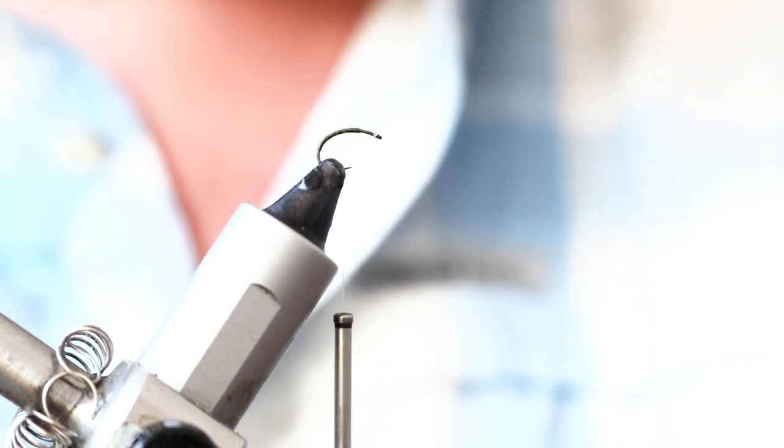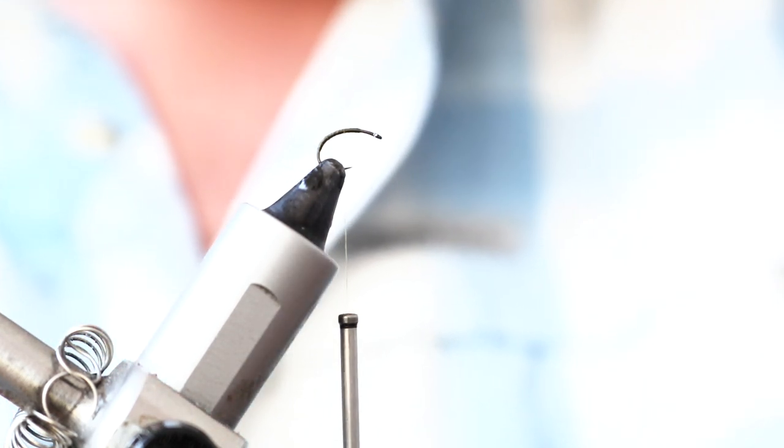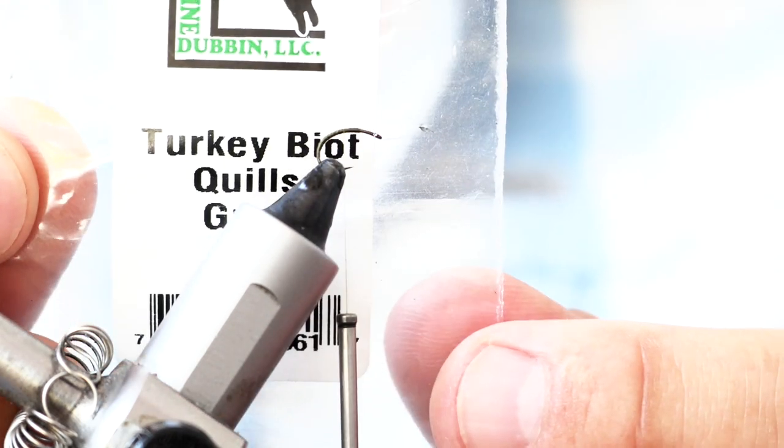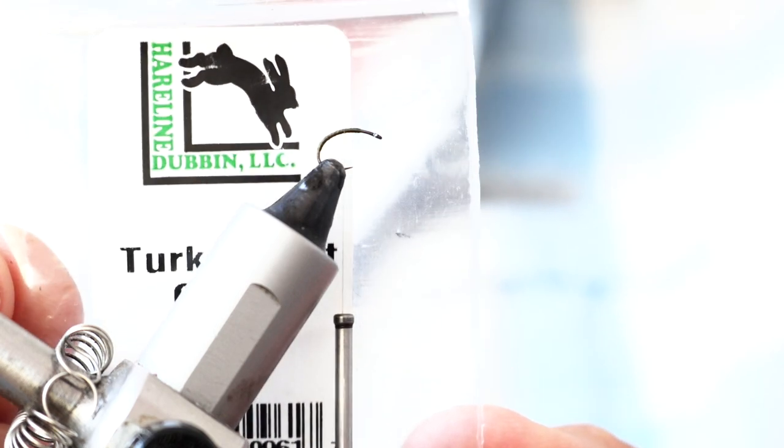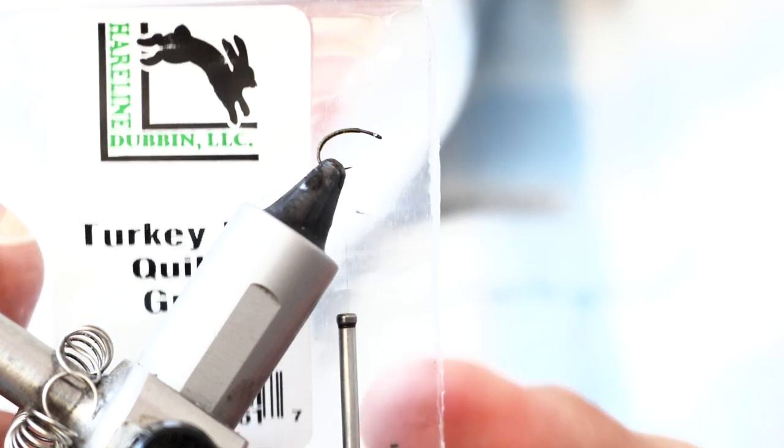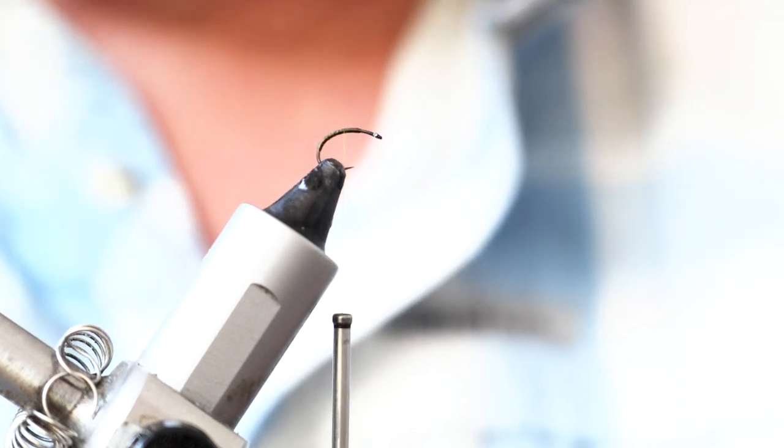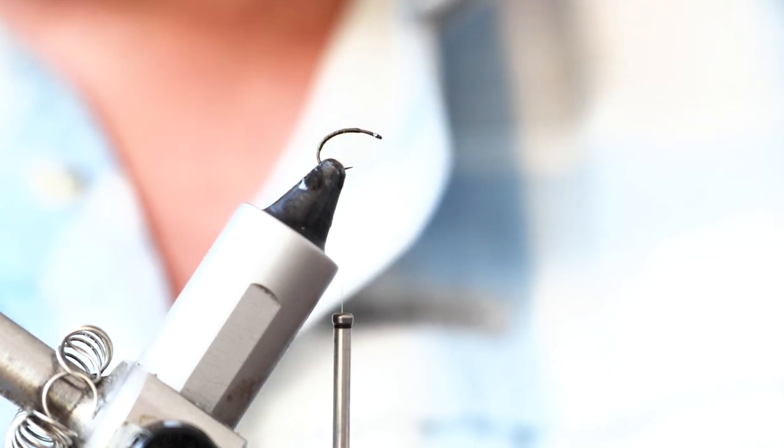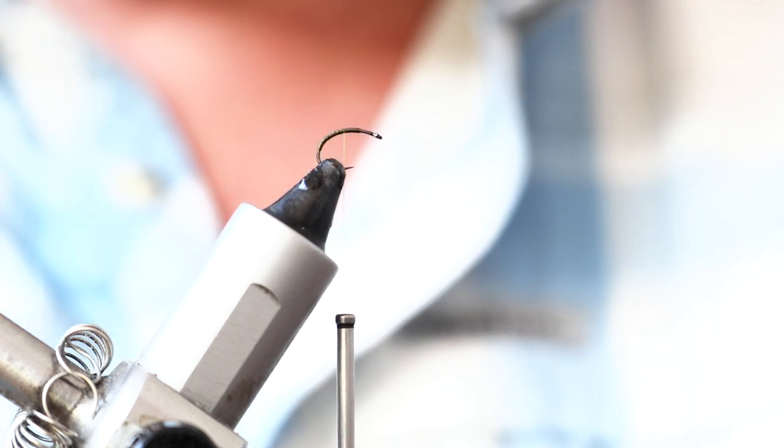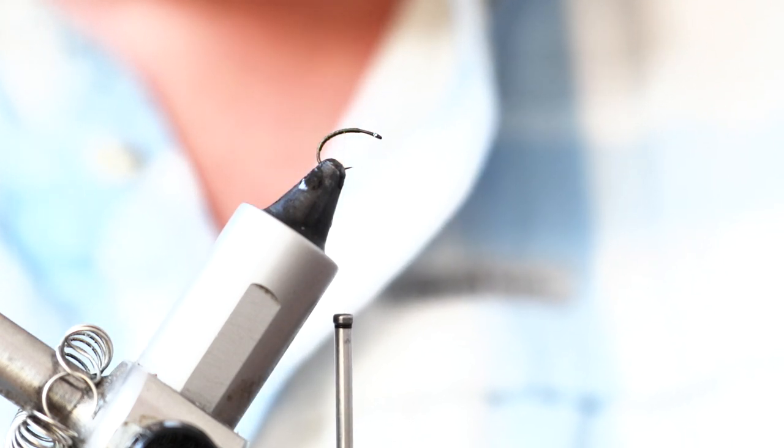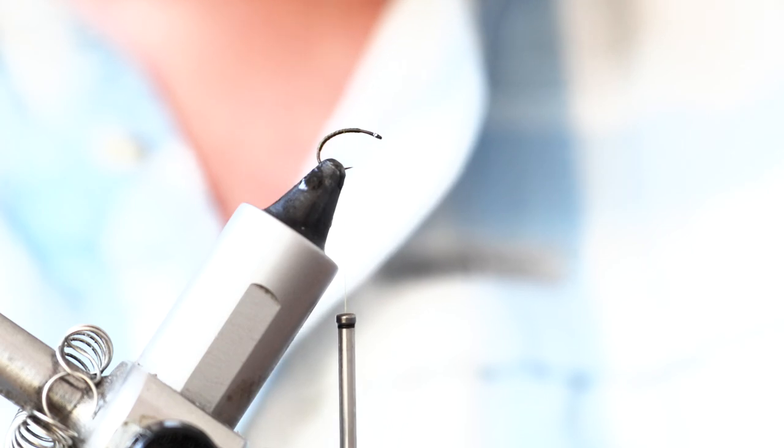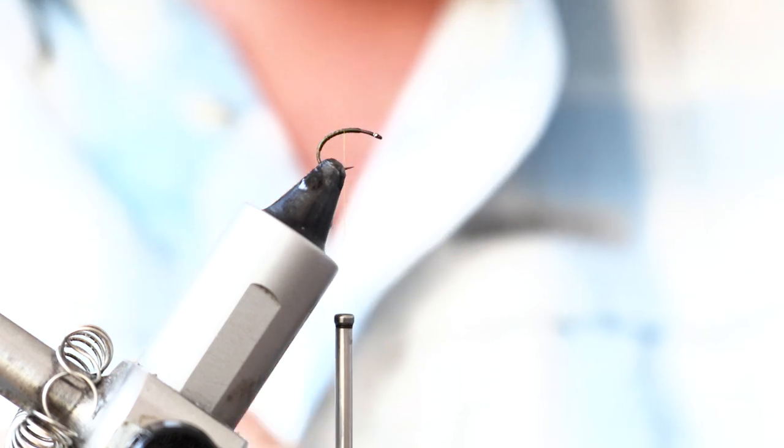The other two materials that are really important in this fly, first of all, turkey biot. This is a hairline turkey biot in grey. I've struggled a little bit with this because Jeremy's original pattern uses heron hurl, which you can't get hold of these days. Finding an alternative that works has been really quite tricky. But this, I think, does it really nicely.